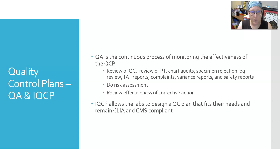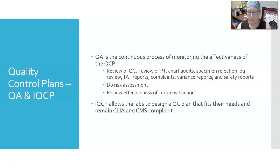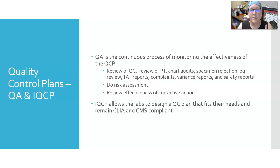QA, or quality assurance, is the continuous process of monitoring the effectiveness of the quality control plan. It can include the review of quality control on each analyzer, review of proficiency testing for each test, chart audits, specimen rejection log review, turnaround time reports, complaints, variance reports, and safety reports. Labs should do risk assessments to identify risks and review the effectiveness of any corrective action. The IQCP — Individualized Quality Control Plan — allows labs to design a quality control plan that fits their needs while remaining CLIA and CMS compliant.